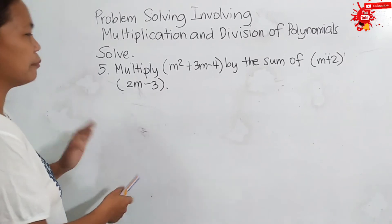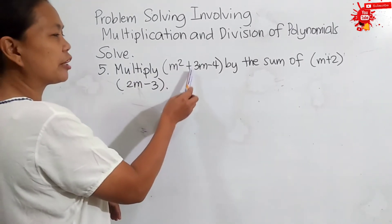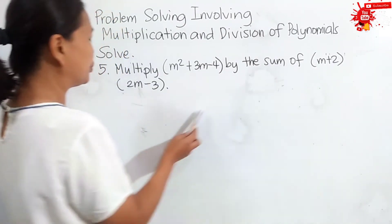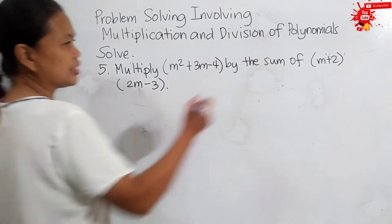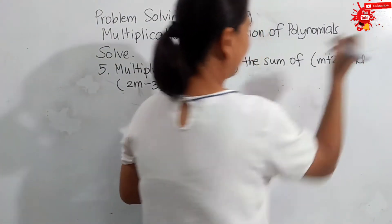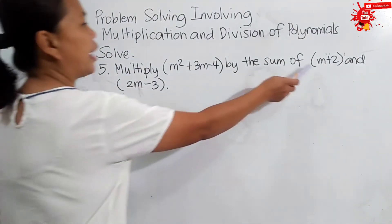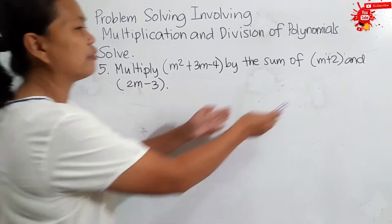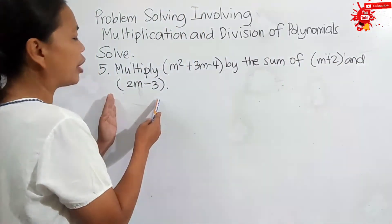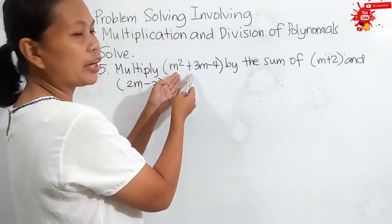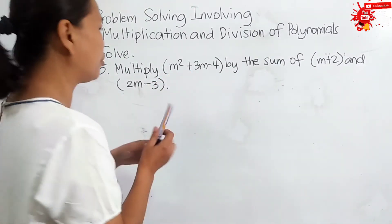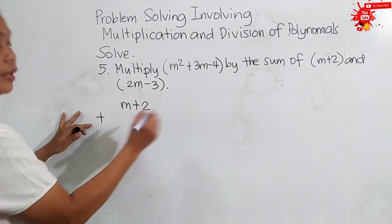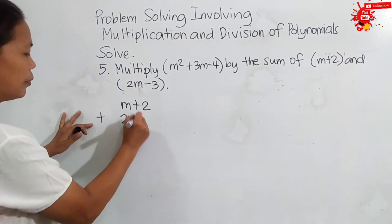Let us have example number 5. Multiply m squared plus 3m minus 4 by the sum of m plus 2 and 2m minus 3. We have two binomials: m plus 2 and 2m minus 3. So, we have to find first the sum of m plus 2 and 2m minus 3. Let us add: m plus 2 plus 2m minus 3.